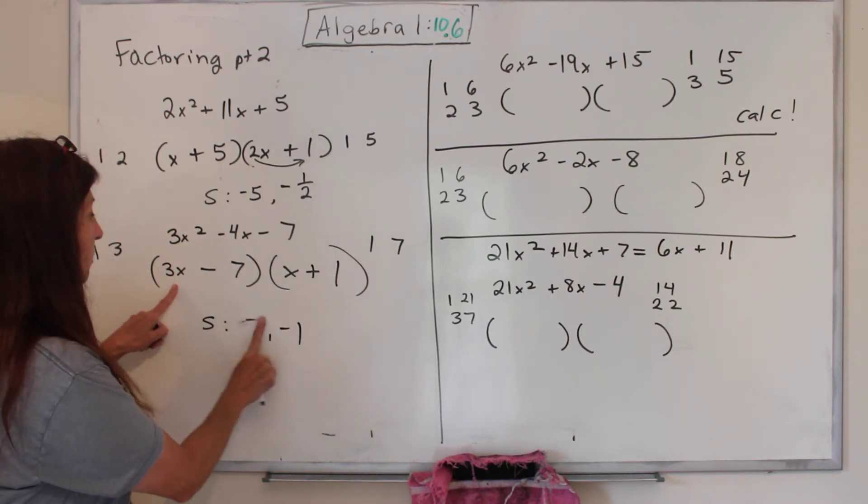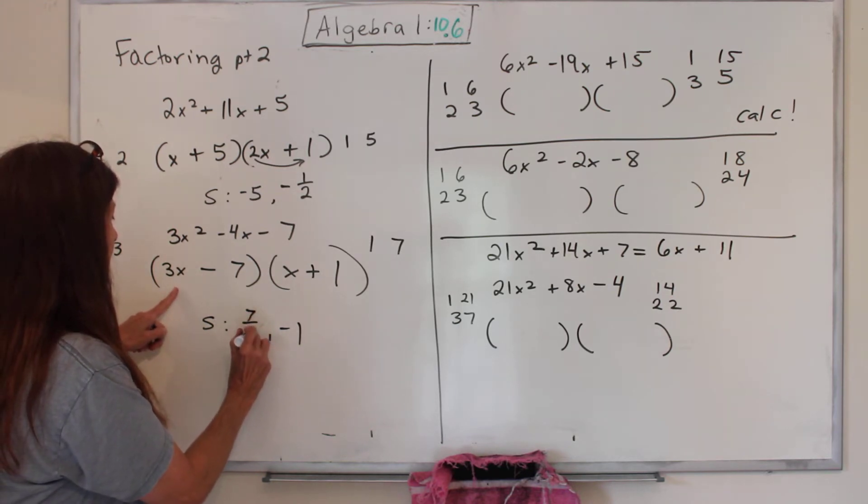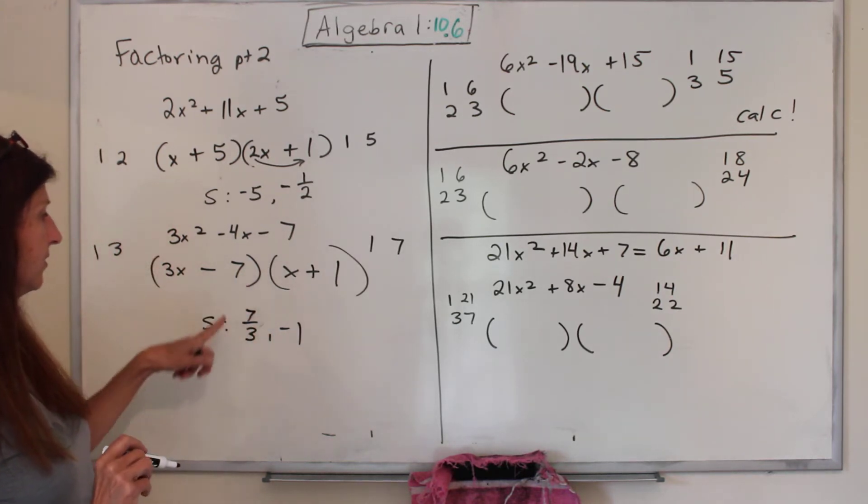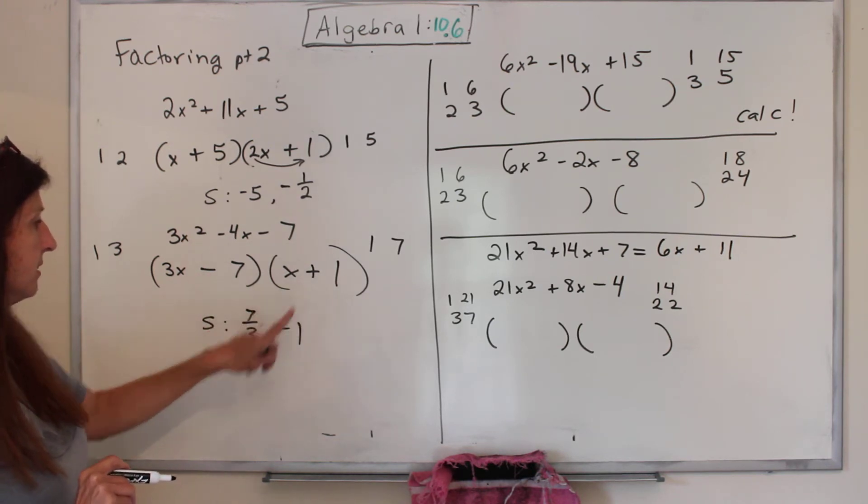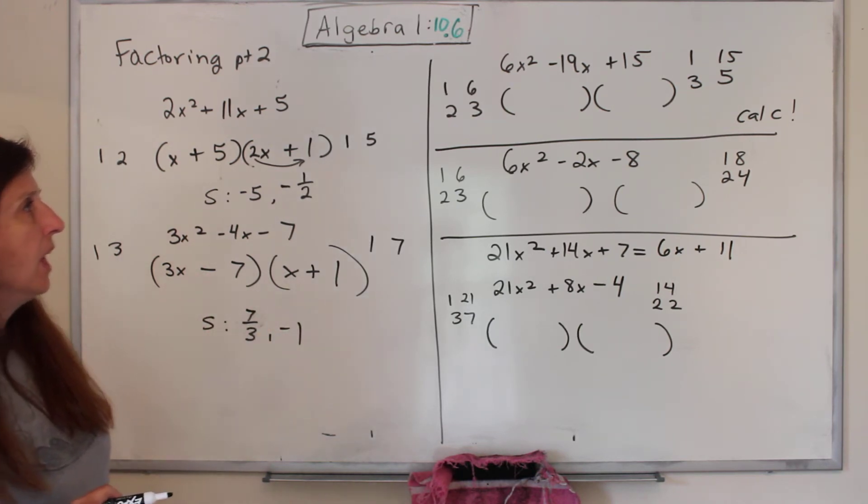So the solutions are... oh, I'll cut that off. Pretend that didn't happen. 7 thirds - remember, it swings underneath - and negative 1. Opposite sign, that's positive. Opposite sign, that's negative.